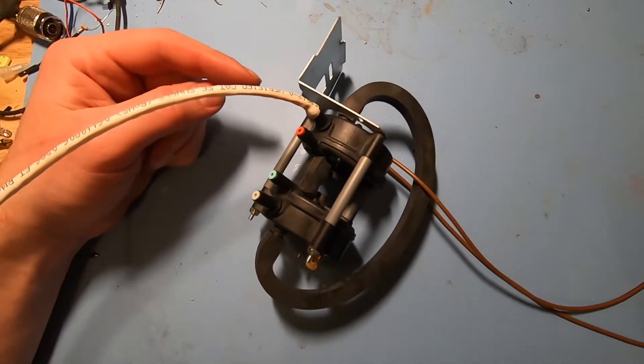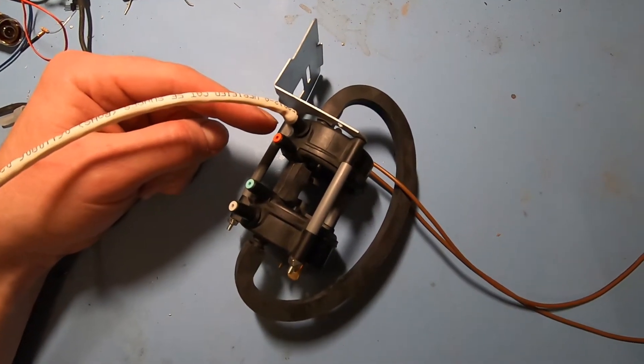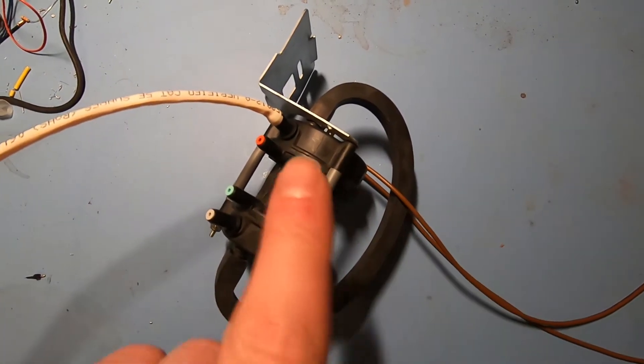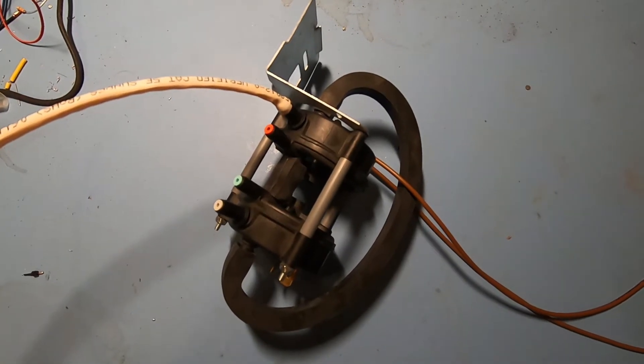Here's the pressure switch on my bench. This back switch right here is the high pressure switch. I got my multimeter hooked up here, and I got a little tube here that I'm going to blow into so we can test it.